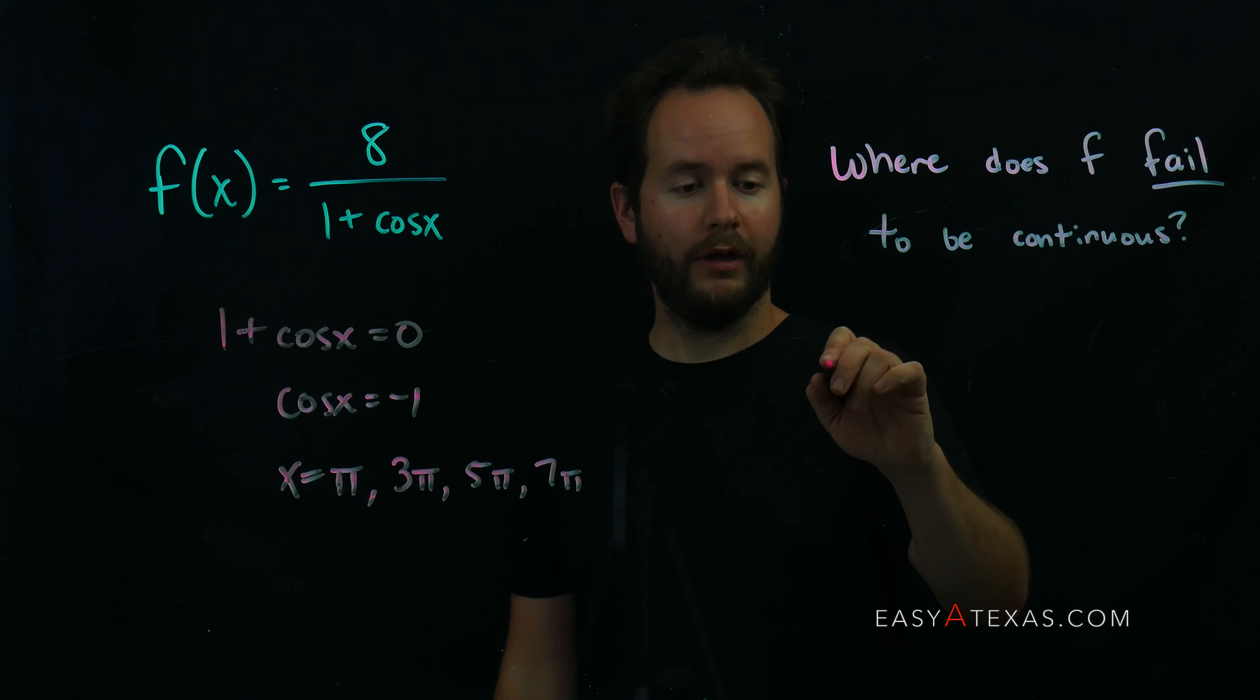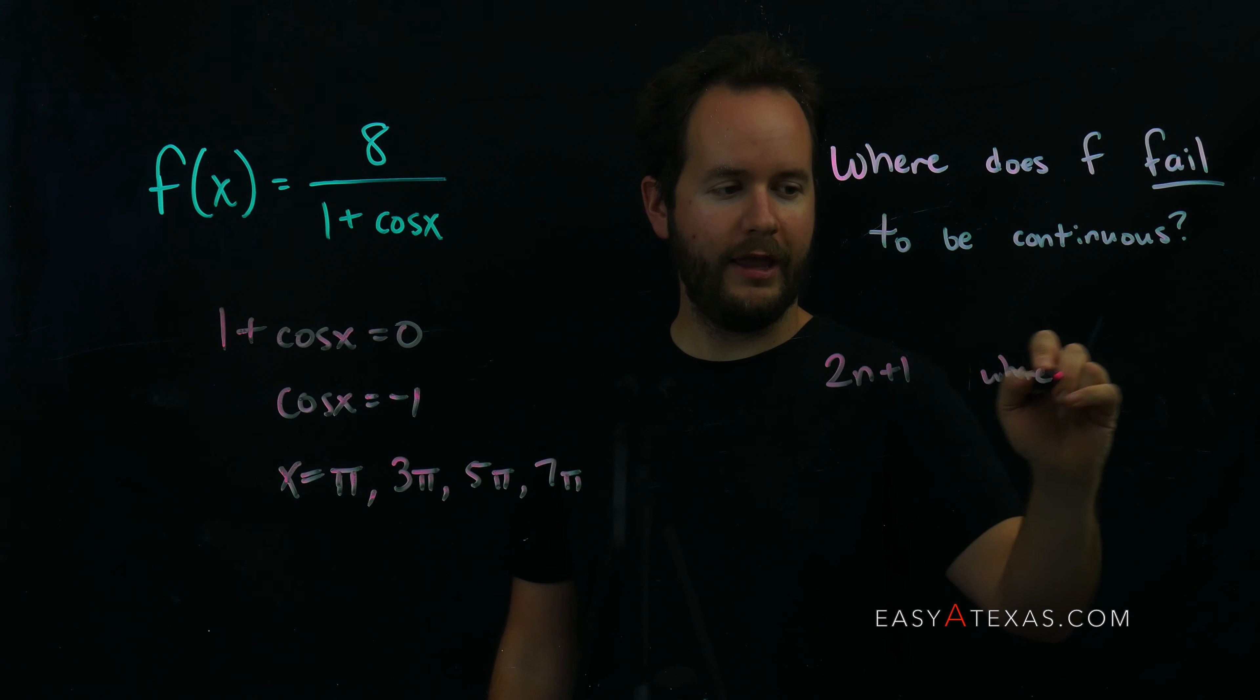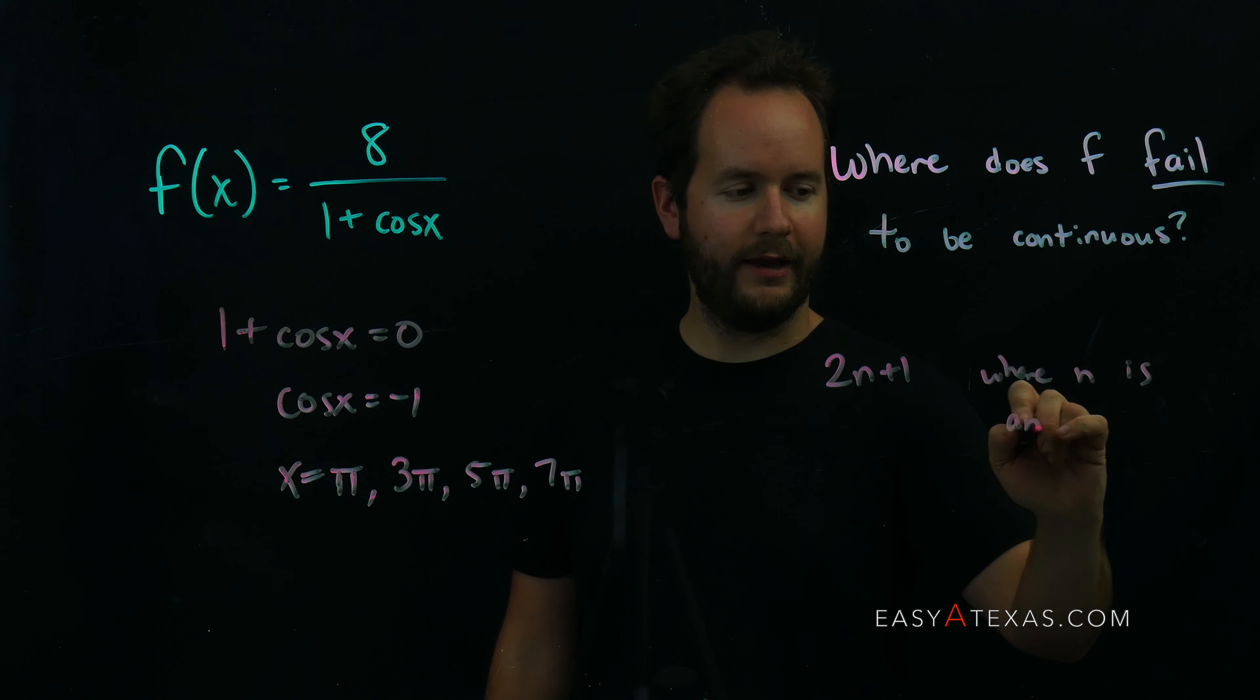Well, a good way to represent an odd number is to say 2n plus 1, where n is an integer.